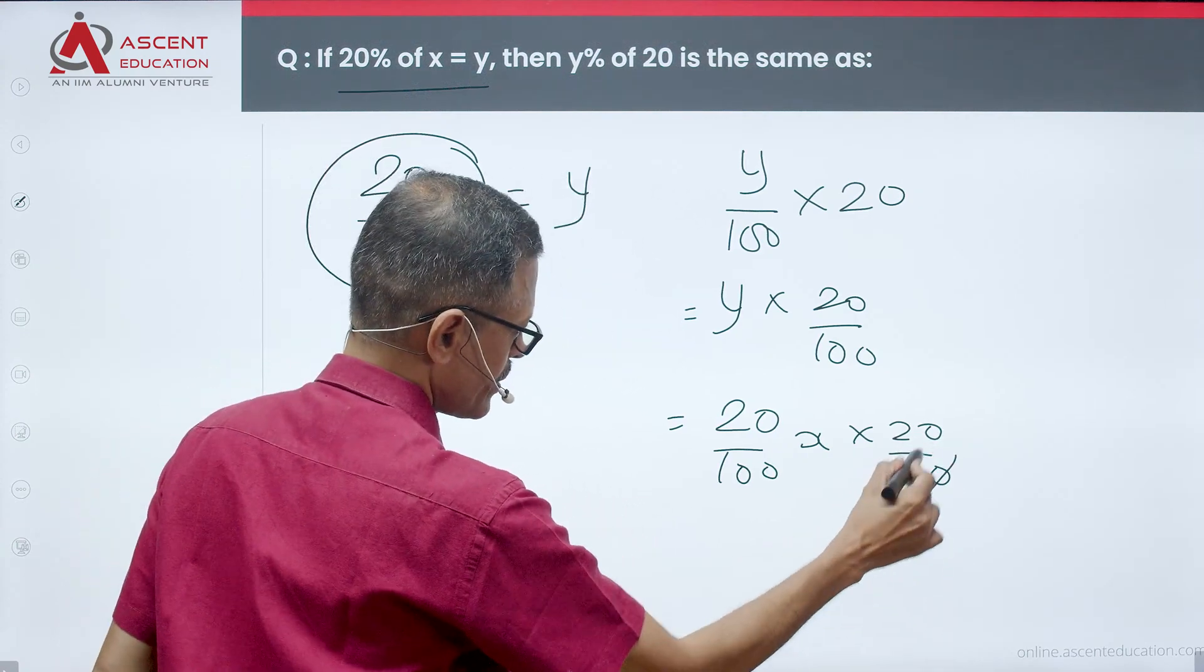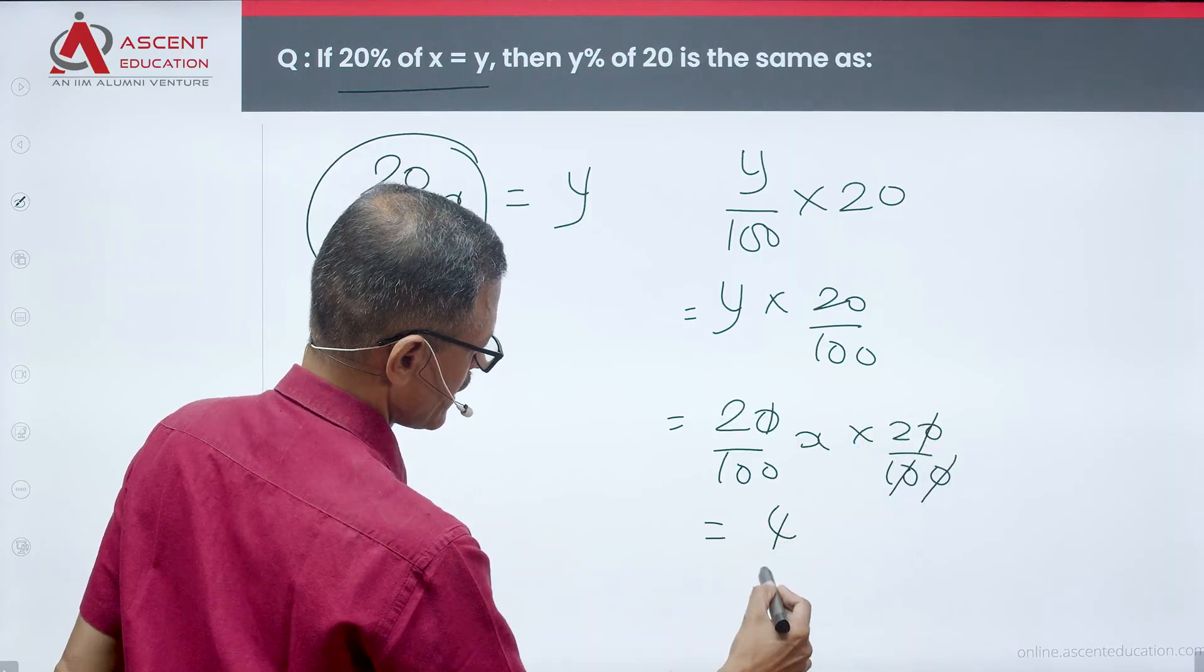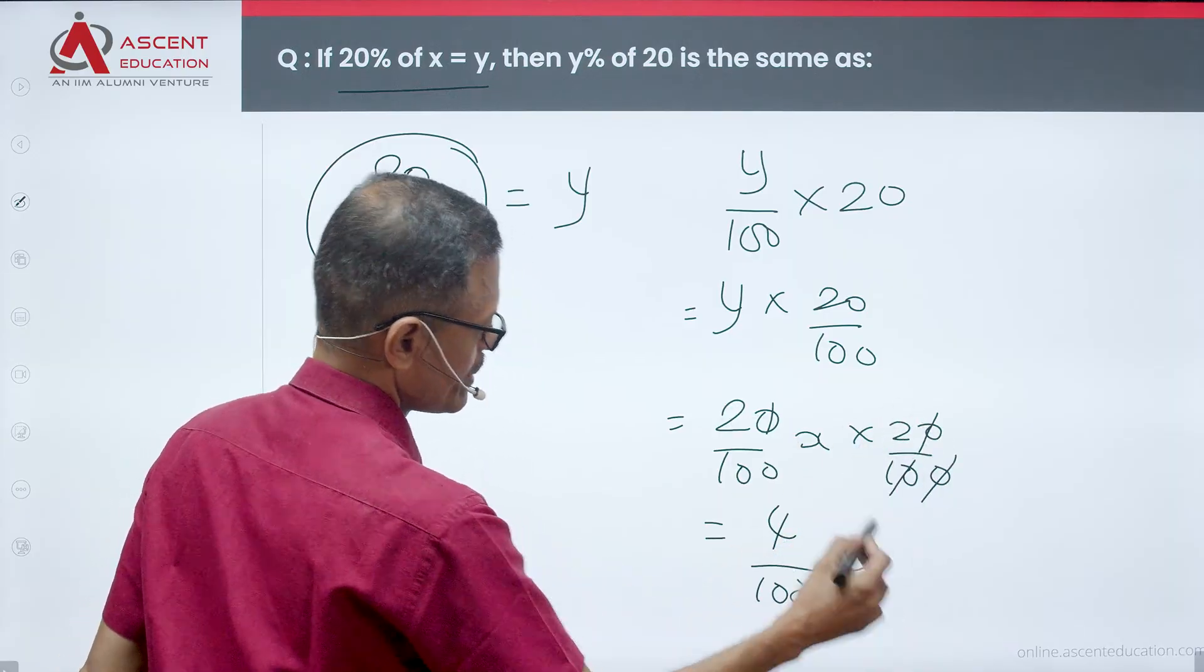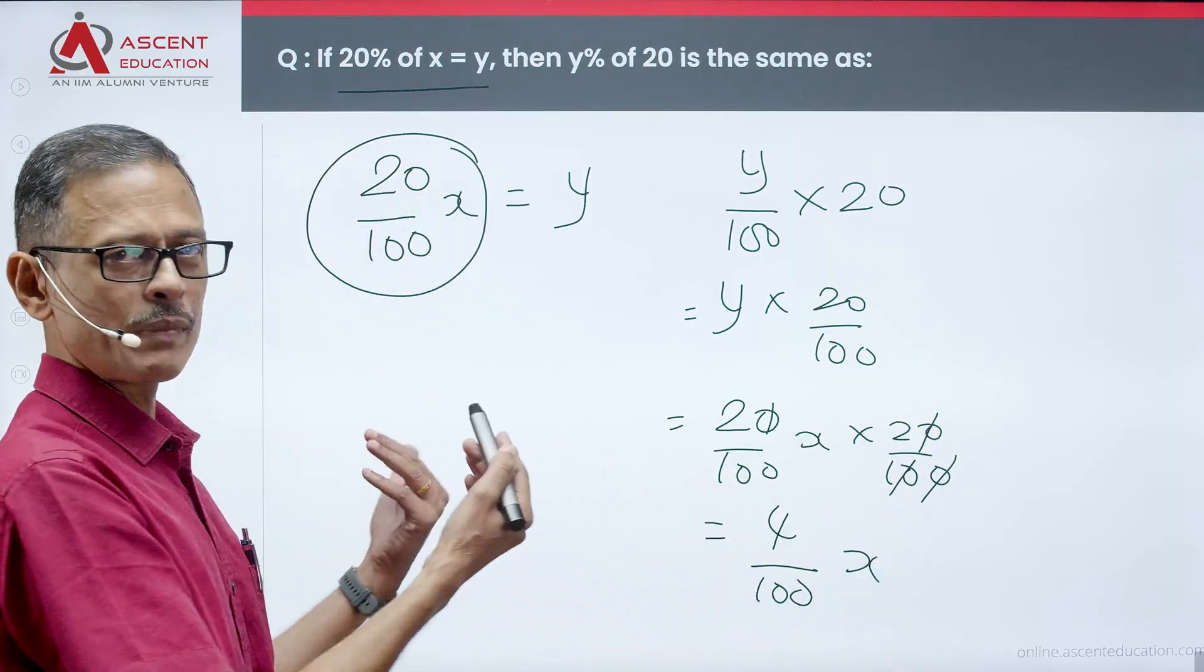If we cancel these two, we get 4 in the numerator and 100 in the denominator into x. So 4/100 x.